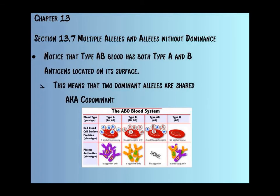Notice that on this chart, type AB blood has both A and B antigens. This is the type of blood that I have, so I could actually take blood from anyone who is A, B, or O. They have both antigens, which means that two dominant alleles are shared — they are codominant. I actually have codominant blood running through my arteries and veins. Although A is dominant and B is dominant, neither is recessive; the body can actually have both on its blood cells.